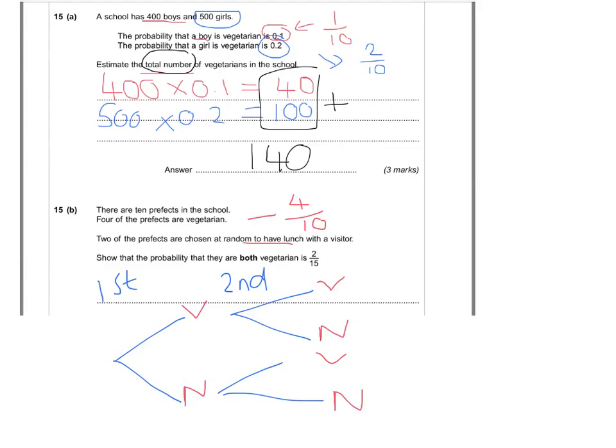Now, the question says they are both vegetarians. Now, the only way we can get both vegetarians is by taking this path here. So, the probability of a vegetarian on the first go, we've said already, is 4 tenths, and that was from up here. 4 of them are vegetarians.